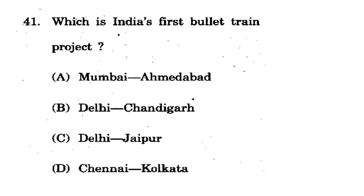Question 41: Which is India's first bullet train project? Options: Mumbai-Ahmedabad, Delhi-Chandigarh, Delhi-Jabalpur, Chennai-Kolkata. The correct option is A - Mumbai-Ahmedabad. Whenever bullet train is mentioned, we recall this route. India's first bullet train will run between Mumbai and Ahmedabad.